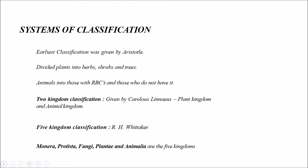The earliest classification was given by Aristotle. He divided plants into herbs, shrubs, and trees, and animals into those with red blood cells and those without red blood cells. Based on this he categorized animals into two groups.